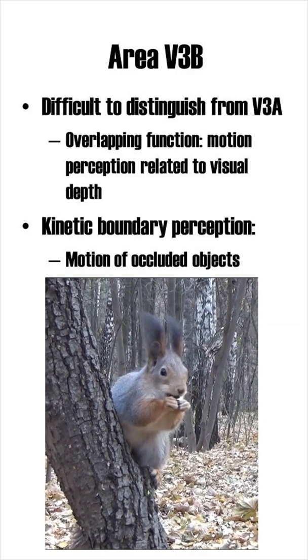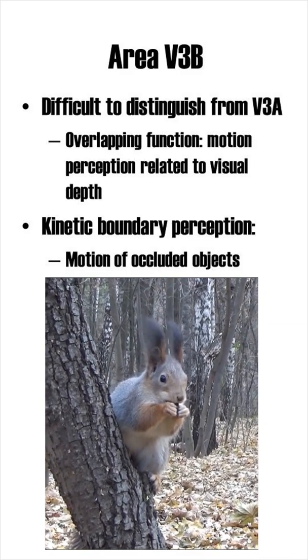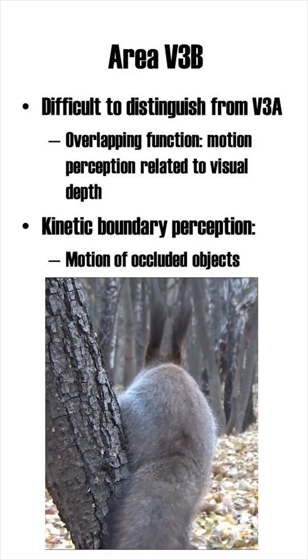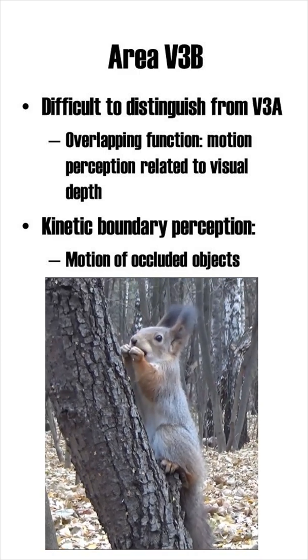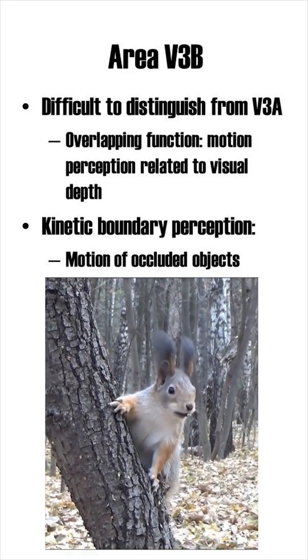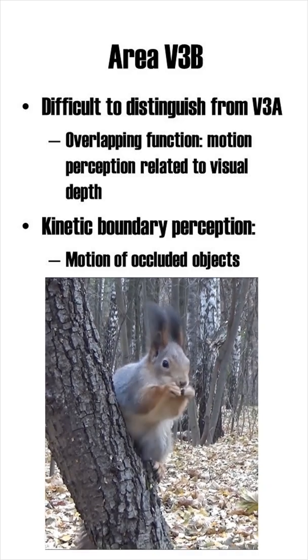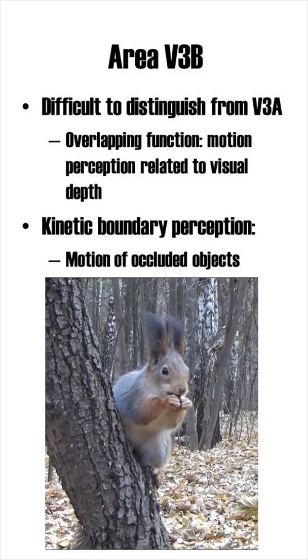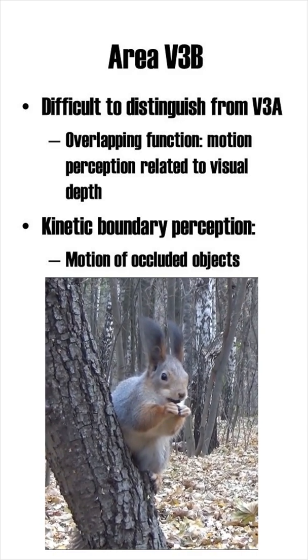For example, when a moving object is partially occluded by another non-moving object, motion is recognized at the boundary of this occlusion. Processing this so-called kinetic boundary is the proposed main function of area V3b.